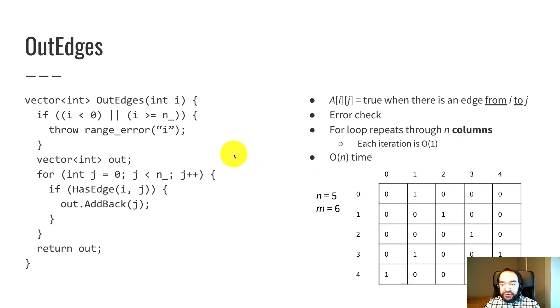Now for out edges. It gets a little bit more tricky with out edges and in edges. So what I need to do is loop through all n columns of row number i. So for example, to compute the out edges of vertex number three, I need to go to row three, loop through every column.